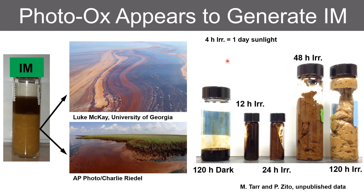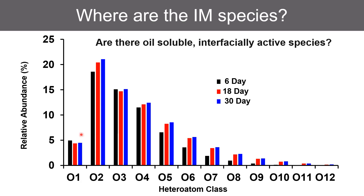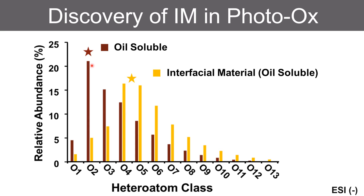We also note that photo-oxidation appears to generate interfacial material. This is unpublished results from Matt Tarr and Phoebe Zito, showing that a dark control compared to 12-hour, 24-hour, 48-hour, and 120-hour exposures with high stirring rates clearly shows the formation of peanut butter-like material that is water-laden petroleum. The question becomes: where are the interfacially active species among the oil-soluble oxidized species we see from microcosm experiments? It turns out we have a method to isolate these, and that distribution splits into two: low oxygen content is not interfacially active, and higher oxygen content is interfacially active. For the first time, we are able to confirm and characterize interfacially active species in photo-irradiated petroleum.